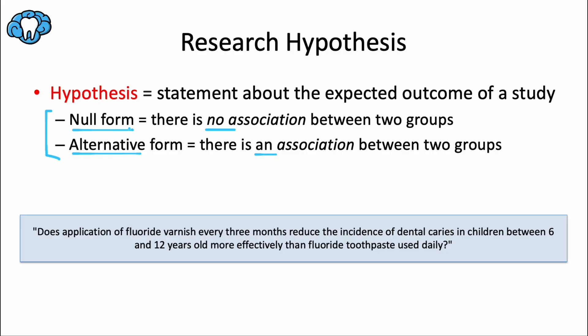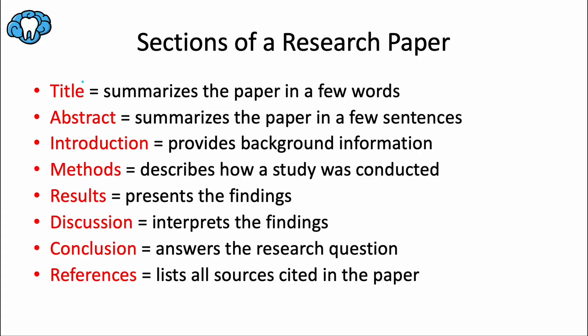I want to review the anatomy of a research paper, because a well-structured research paper typically follows a standard format with several key sections, each serving a unique purpose. It's important to know this information for the board exam in case they ask you about the reason for a specific section. The title is a concise statement that summarizes the main topic or findings of the research. It should be informative and specific, giving readers a clear idea of the paper's content, and it might even outright state the study design, like a randomized controlled trial.